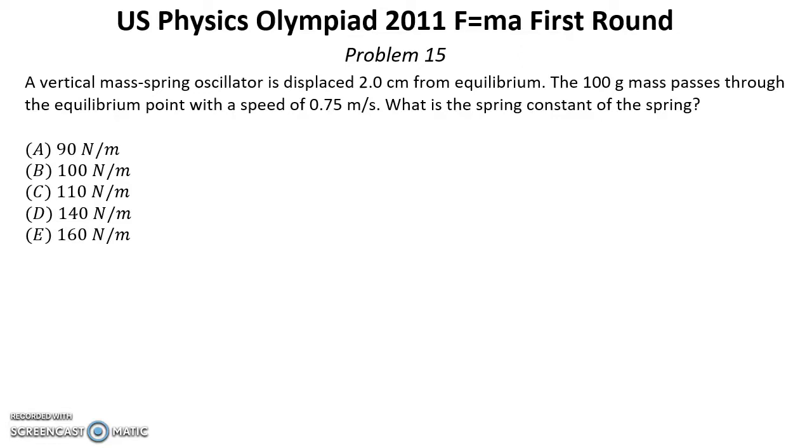Problem fifteen. Solution for this problem you can find below this video on the reference in the description. A vertical mass spring oscillator is displaced two centimeters from equilibrium. The 100 gram mass passes through the equilibrium point with a speed of 0.75 meters per second. What is the spring constant of the spring?